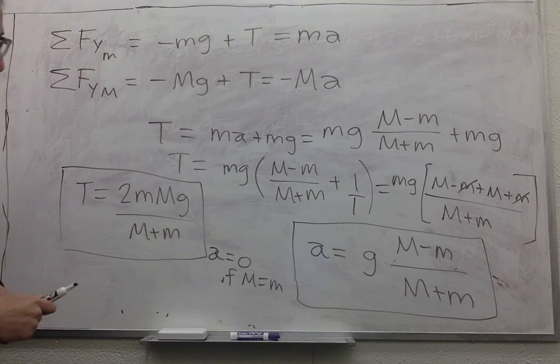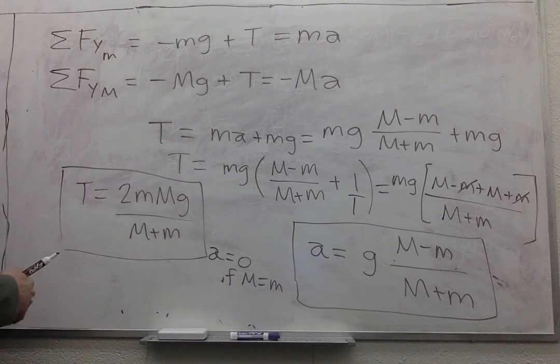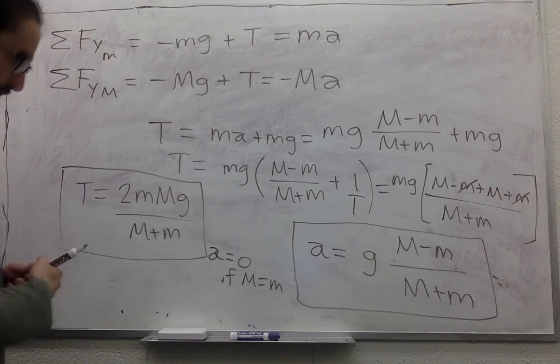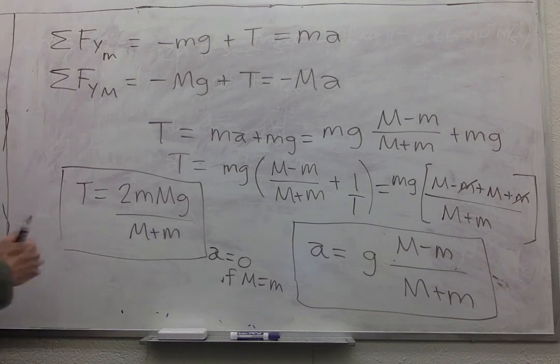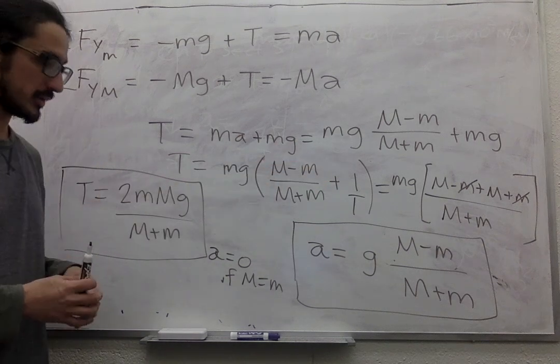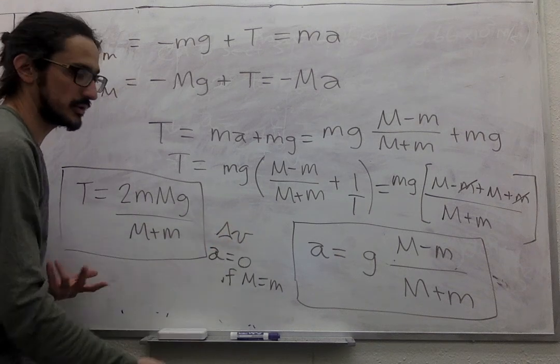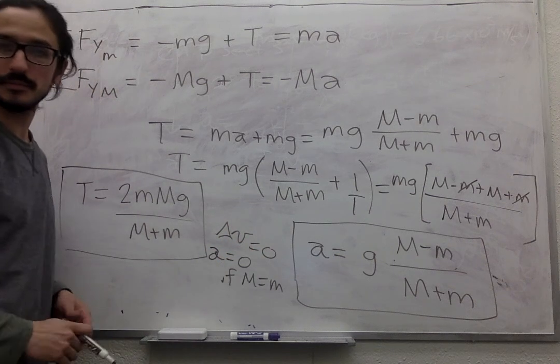So if the system had some initial velocity, it will just continue moving with that velocity. It will not stop. If it didn't have an initial velocity, then it will just remain there. Acceleration is zero, which means that the change in velocity is zero.